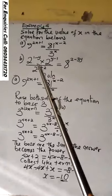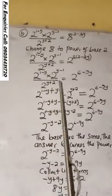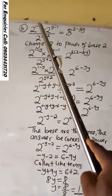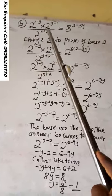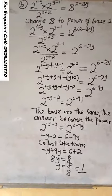Now, let us look at question B. 2 raised to the power 1 minus y times 2 raised to the power y minus 1 over 2 raised to the power y plus 2 equals to 8 raised to the power 2 minus 3y.